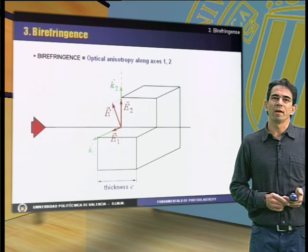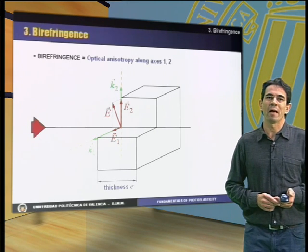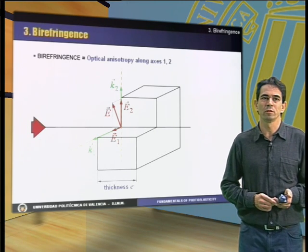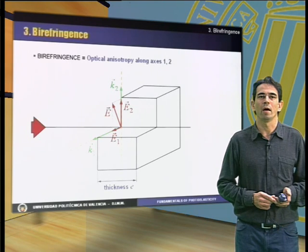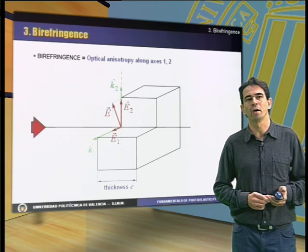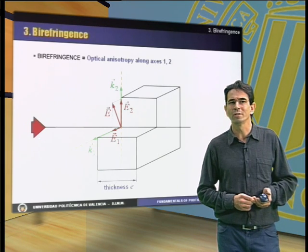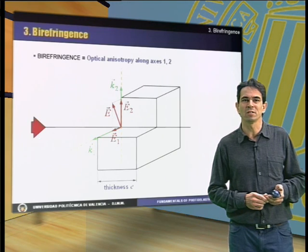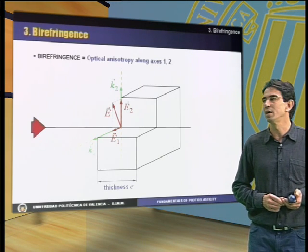You can see here how the ray is extinguished once it reaches the analyzer filter. Therefore, the polarized ray that reaches the birefringent material can be decomposed into the components E1 and E2 with respect to the two orthogonal optical axes, k1 and k2. Note that the ray must traverse a given thickness of material E.